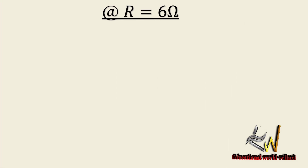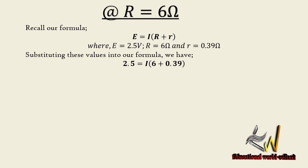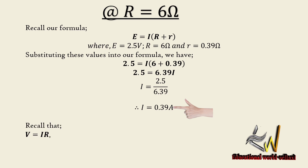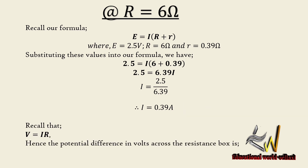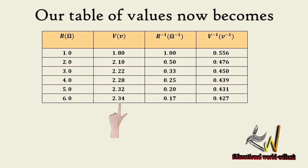When the resistance box is set to 6 ohms, substituting into the equation gives 2.5 = I(6 + 0.39), and simplifying gives current = 0.39 amperes. The voltage drop is V = 0.39 × 6 = 2.34 volts. Table entry: R = 6 ohms, V = 2.34 volts, 1/R = 0.17 per ohm, 1/V = 0.427 per volt.